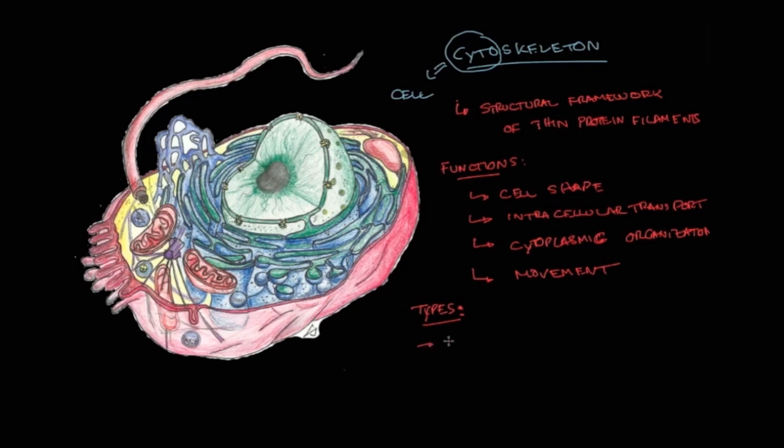Now, the types of thin protein filaments that are very important. Please memorize them because they're quite important and very basic. The first one we have microfilaments. The second one we have intermediate filaments. And the third one, and final one, we have microtubules. And I wrote these down in order of thickness, going from the thinnest ones, the microfilaments, to the thickest ones, microtubules.